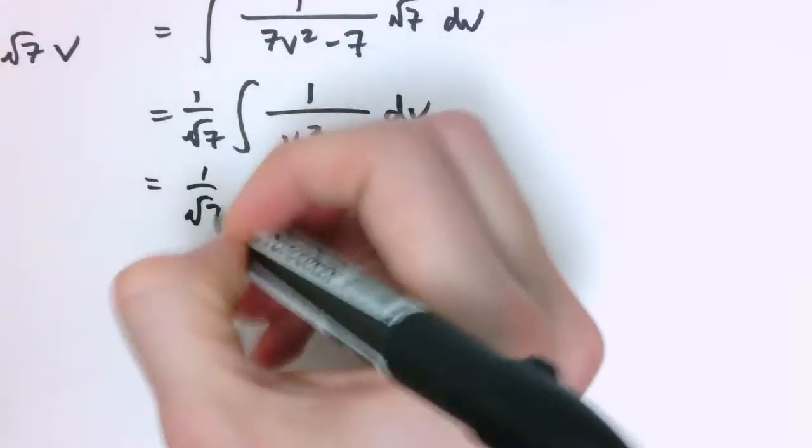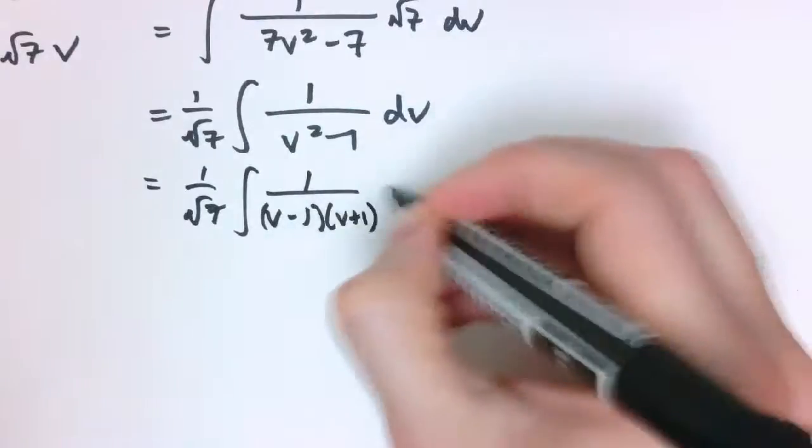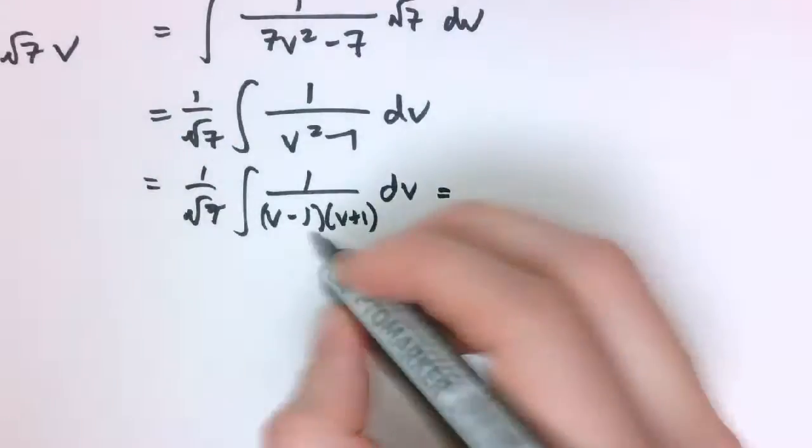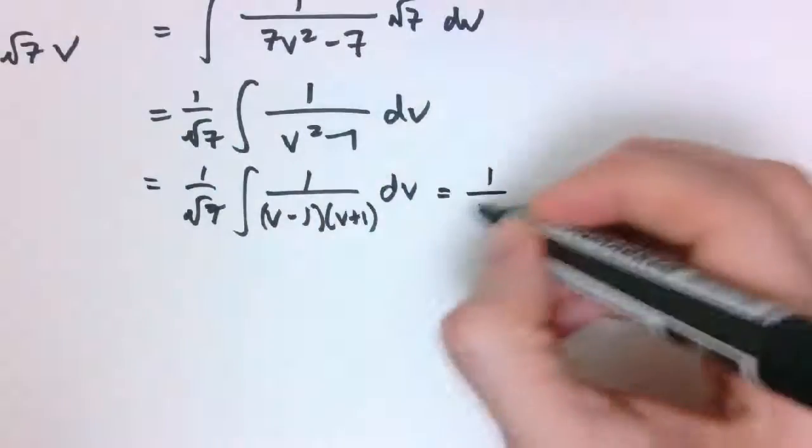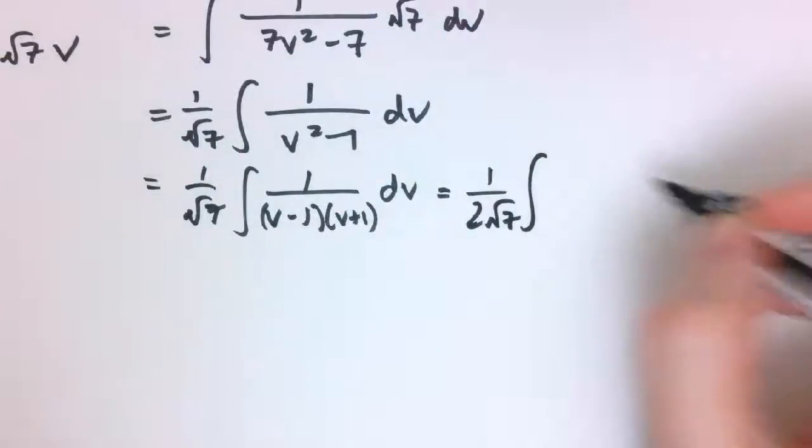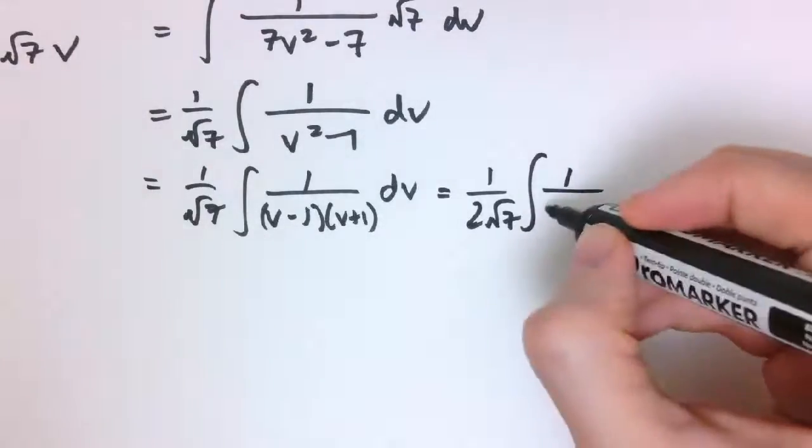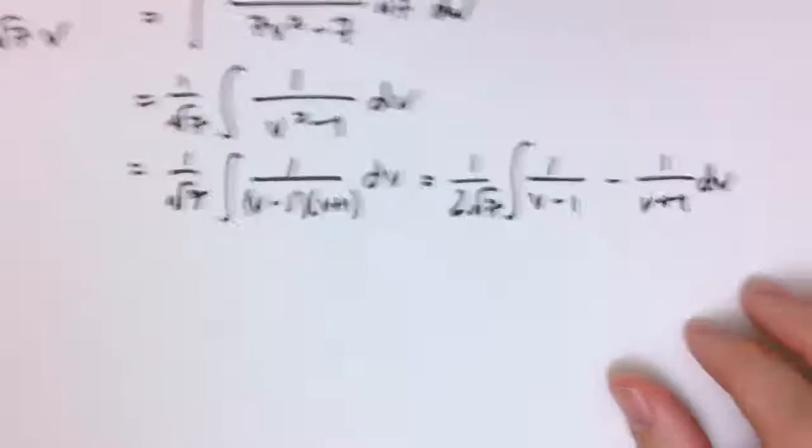But if we notice that this is 1 over v minus 1 v plus 1 dv, we can then write that in partial fractions, and we get a factor of half, so 1 over 2 root 7 now, and you can check that it comes out to be 1 divided by v minus 1 here, minus 1 over v plus 1 dv.